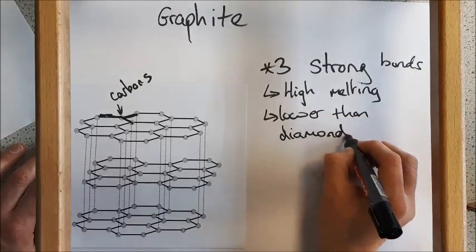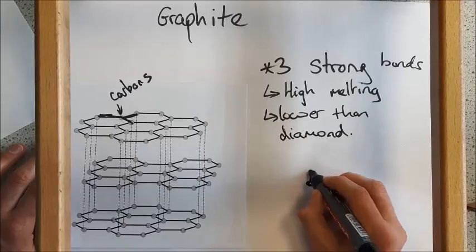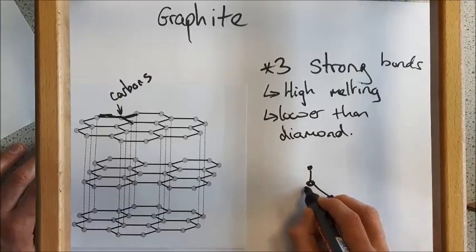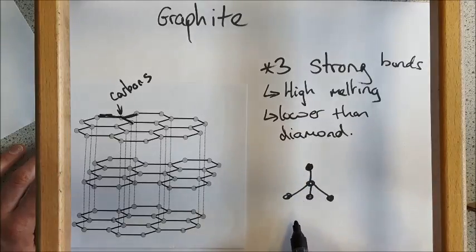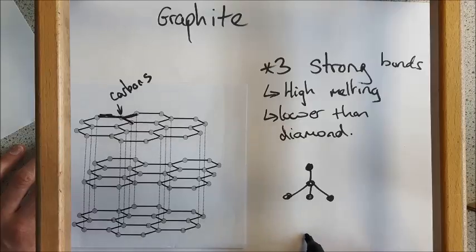To remind you, diamond has a tetrahedral structure, with each carbon having four bonds. So it's got a higher melting point because of that extra bond holding each carbon in place. Graphite still has a high melting point, but lower than diamond.